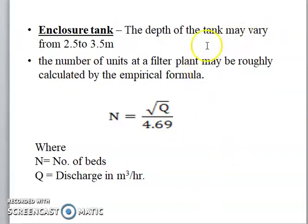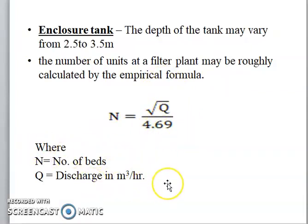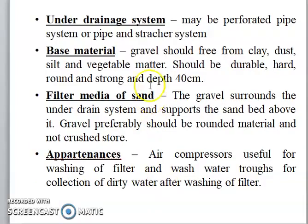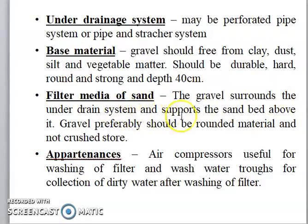The enclosure tank depth may vary from 2.5 to 3.5 meters. The number of filter plant units may be roughly calculated by the formula N = √(Q / 4.69), where N is the number of beds and Q is the discharge in cubic meters per hour. The under-draining system may be a perforated pipe system or pipe and strainer system. Base material gravel should be free from clay, dust, and vegetable matter; should be durable, hard, round, and strong with a depth of 40 cm. The gravel surrounds the under-drain system and supports the sand bed above it; gravel should be rounded material, not crushed stone.